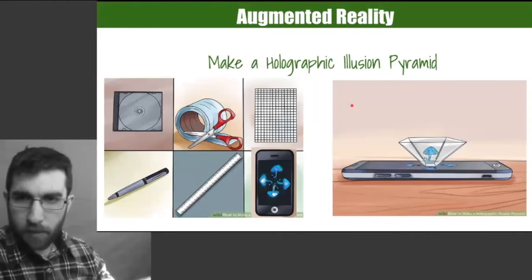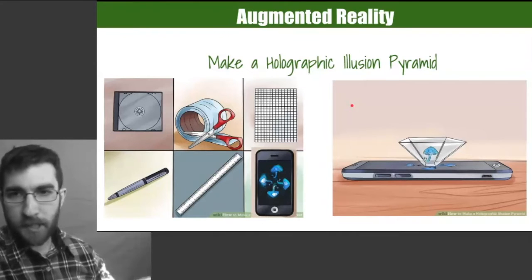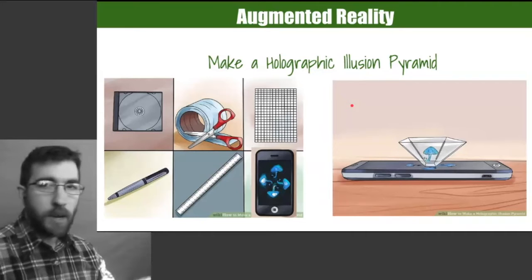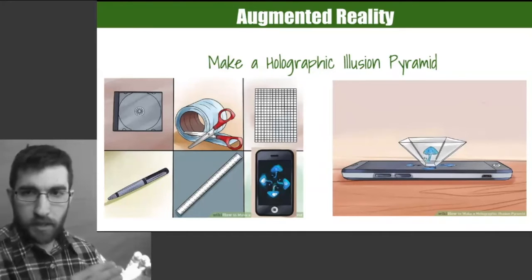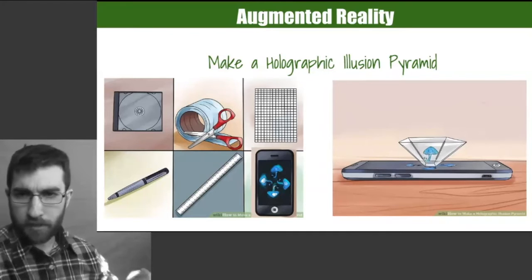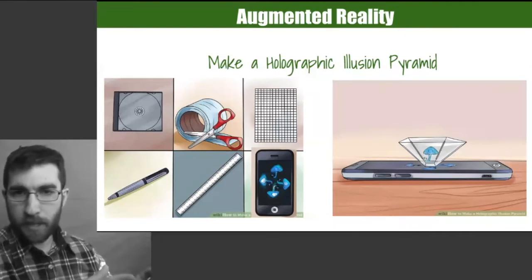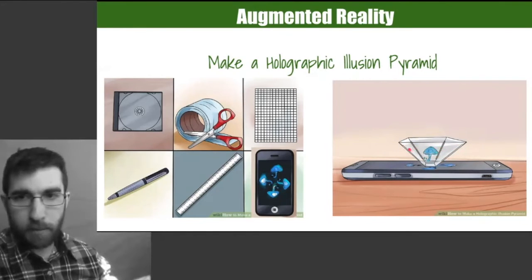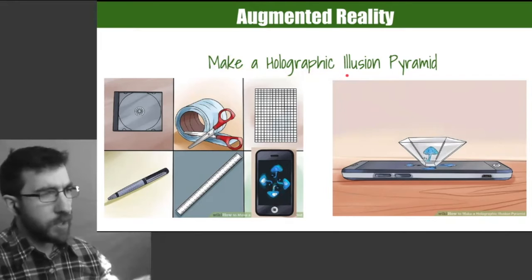We also have the field of extended reality — in this case, augmented reality — where you can actually make a hologram. You do need a smartphone to make the hologram work, but all you need is an old CD case. You use a utility knife or scalpel to cut and shape pieces that you tape together and put on top of your phone, and you get a hologram with the use of an app. It's all explained in this instructions guide.